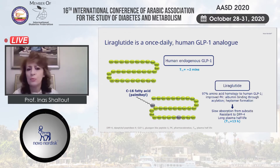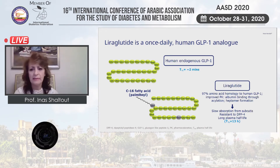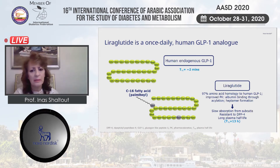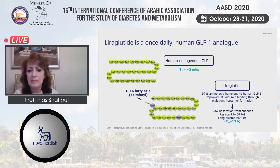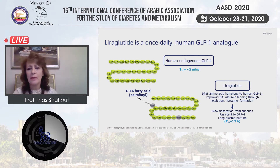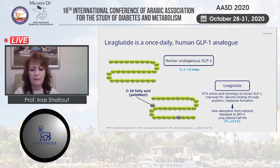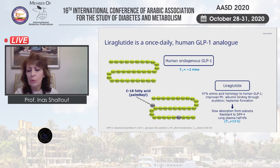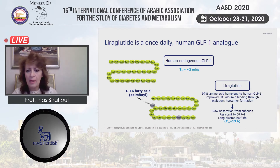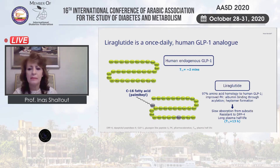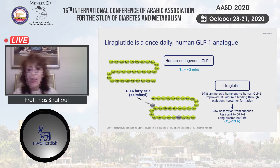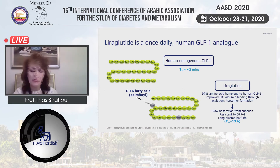Liraglutide is used once per day and is a human GLP-1 analog with 97% amino acid homology to human GLP-1. There is just a change in the fatty acid, leading to improved pharmacokinetics, improved binding, and prolonged action of this GLP-1 receptor agonist. The half-life becomes 13 hours and it is resistant to DPP-4 degradation.